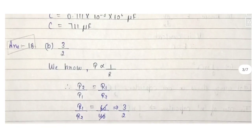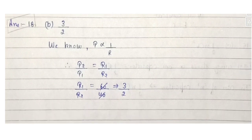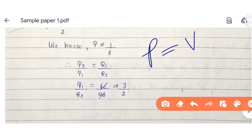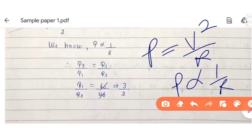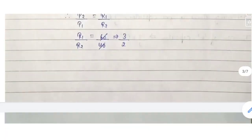Question 18: what is the ratio of resistance of a 40W bulb to a 60W bulb? Using P = V²/R, resistance R is inversely proportional to power P. Therefore R1/R2 = P2/P1 = 60/40 = 3/2.